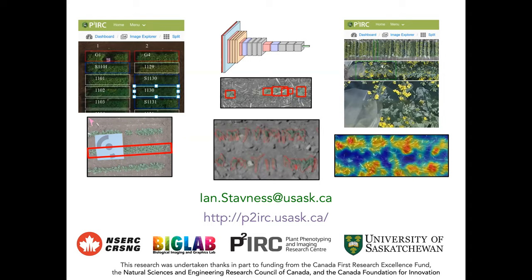A question about root imaging platforms: the main group doing root imaging here is led by Leon Kochin, who came from Cornell to the Global Institute for Food Security. They brought the same indoor imaging setup from Cornell, growing root architectures in various media and taking images — that's the main root imaging platform. We also have some experimental groups using the synchrotron facility at the university for synchrotron-based imaging of root structures grown in pots.